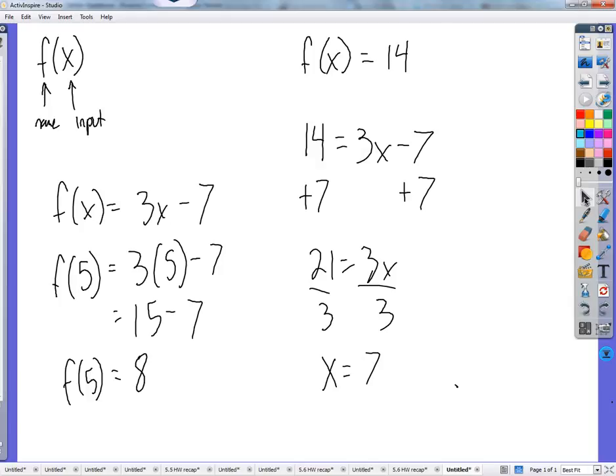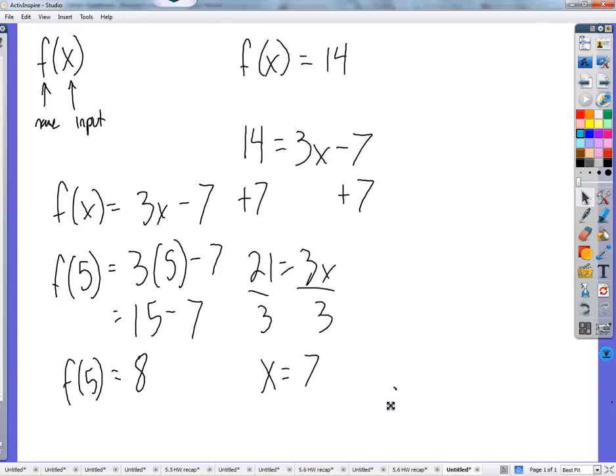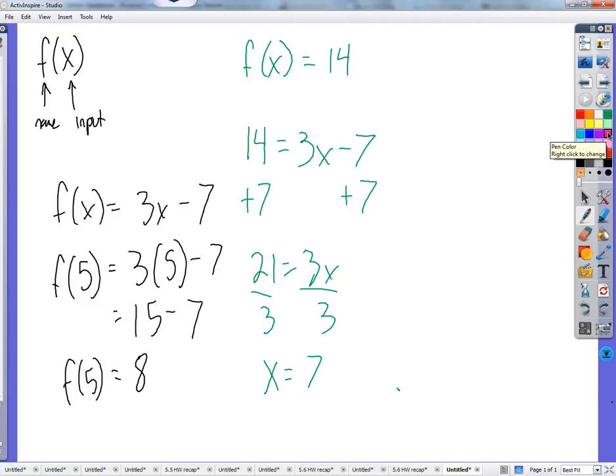One more thing that this f of x thing could be. So here's one example. We can plug something in for x. We could say that we should get something for y, which is the output, or we could just graph this function. If we're going to graph f of x equals 3x minus 7, it's the same as y equals 3x minus 7. f of x and y, they serve the same purpose, they're just written differently. They both stand for what you get out of the function, the output is.